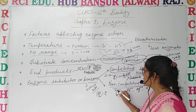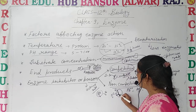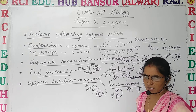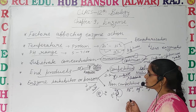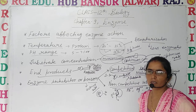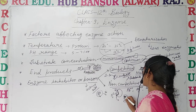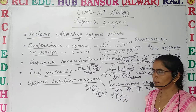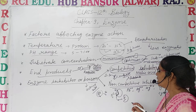When non-competitive inhibitors bind with the active site of the enzyme, they change the configuration of the active site. They permanently block the active sites by changing their shape. Now the substrate cannot bind with the active sites. This type of inhibition is known as non-competitive inhibition.